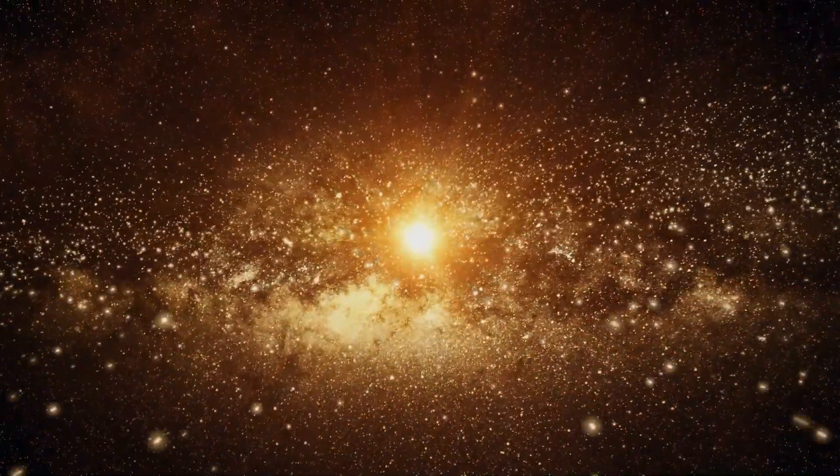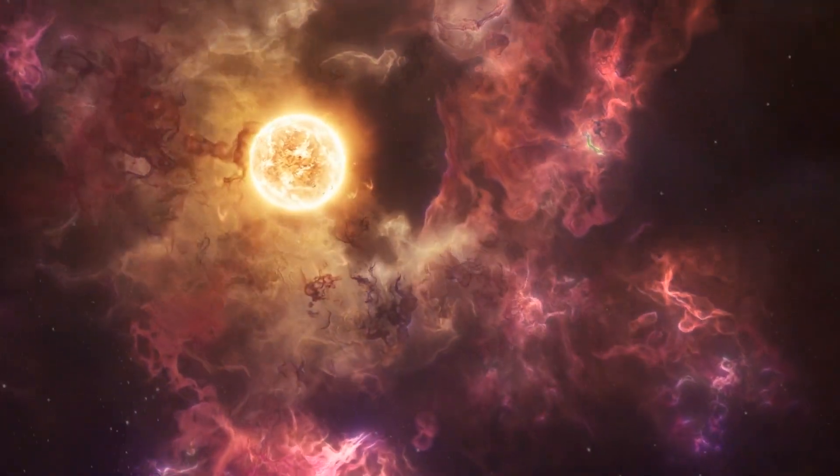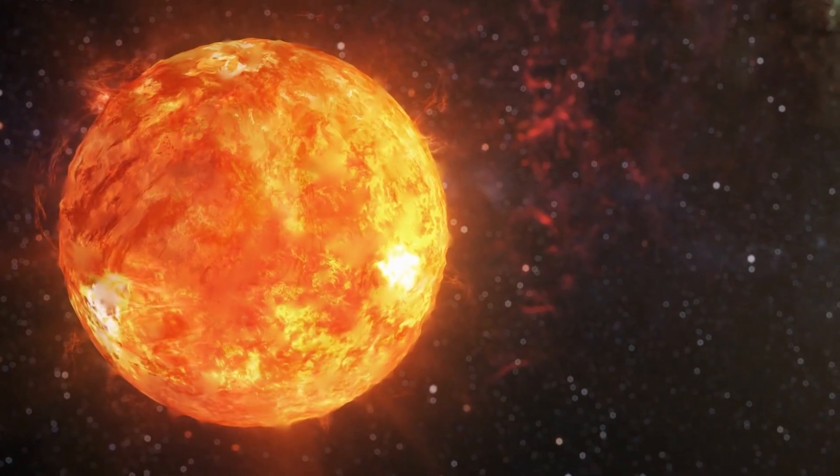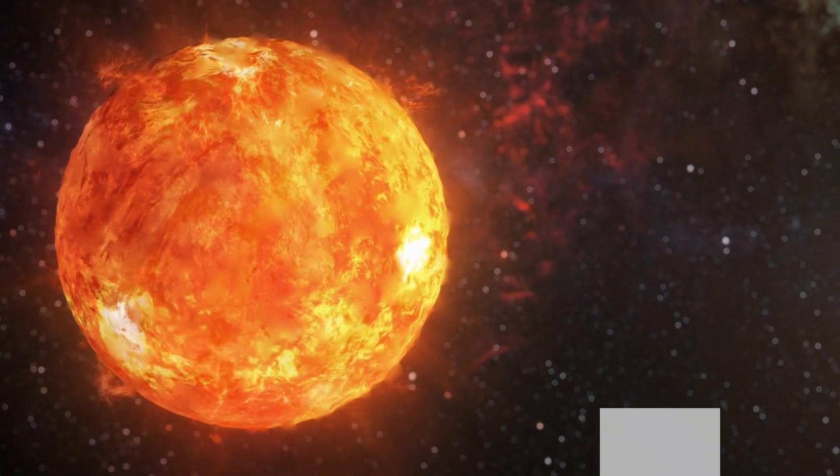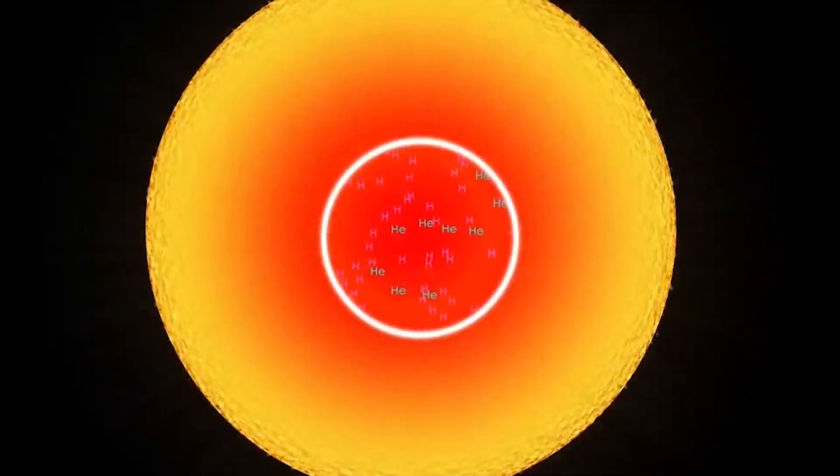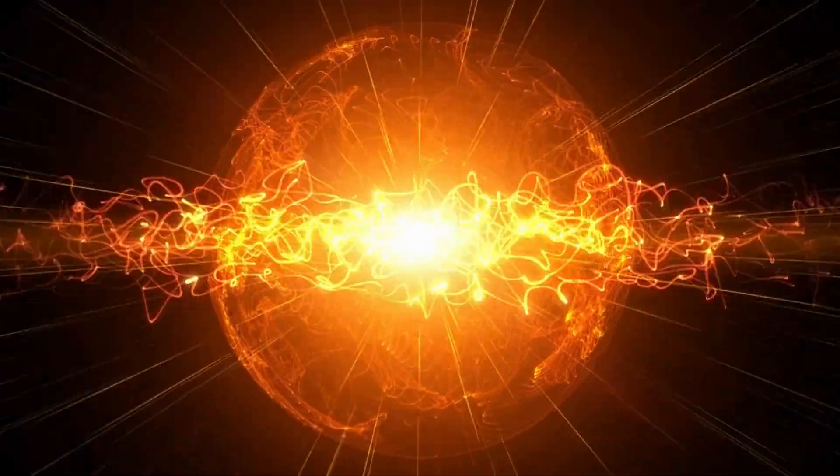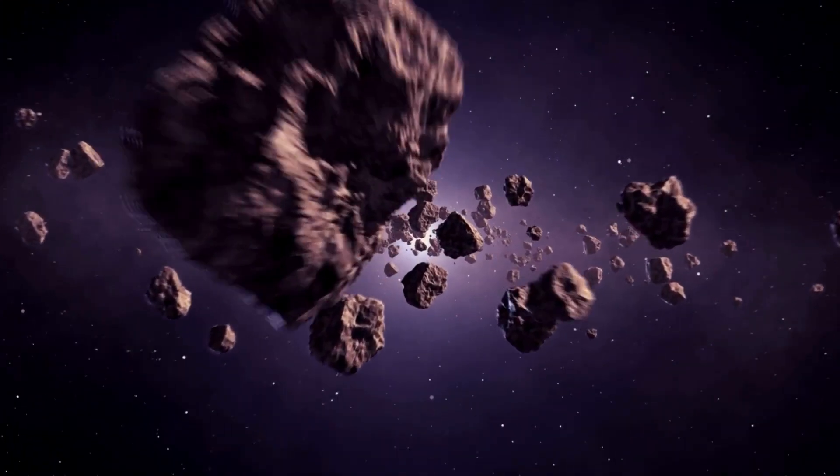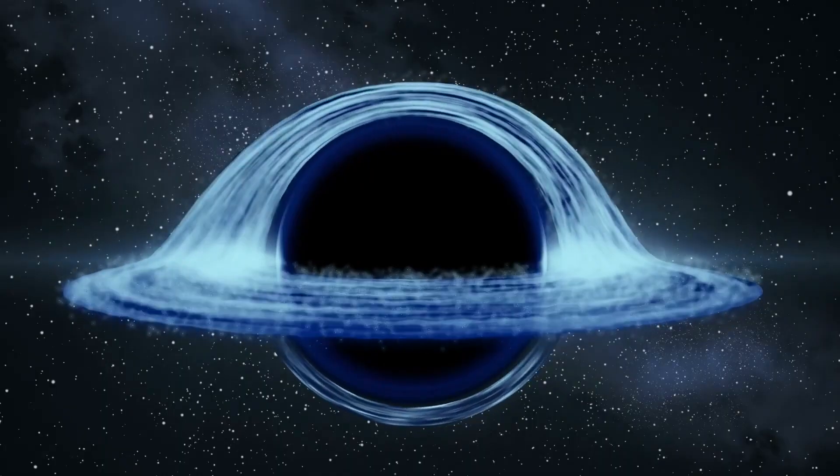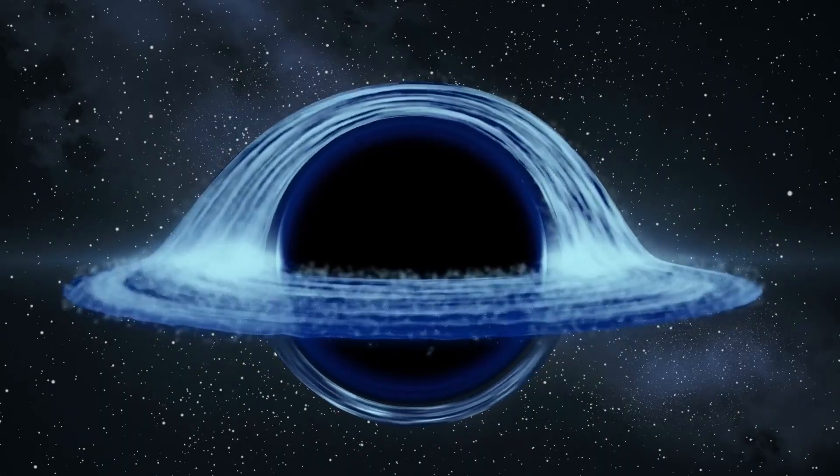So, what lies in store for Betelgeuse after its dramatic supernova explosion? The fate of this once-mighty star is a captivating journey of transformation and rebirth. Following the explosion, Betelgeuse will leave behind a core, and the outcome depends on its mass. If the core's mass is below a certain threshold, it will become a neutron star, an incredibly dense object composed almost entirely of neutrons. Neutron stars are so dense that a small amount of their material would weigh as much as a mountain. Some neutron stars spin at astonishing speeds and can emit beams of radiation, making them observable as pulsars.